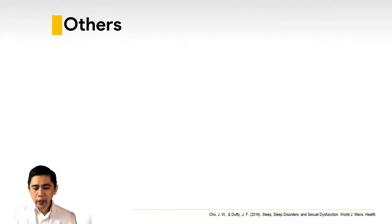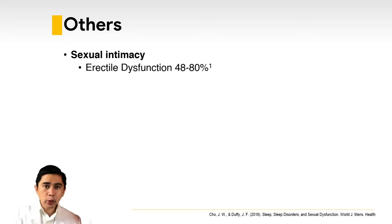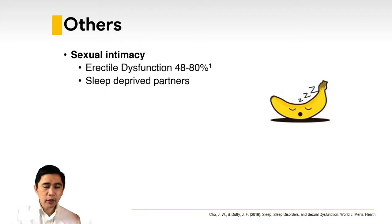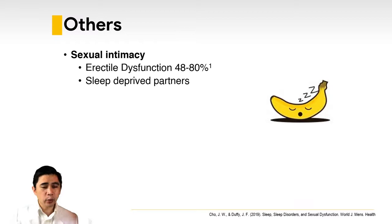OSA also affects sexual intimacy. Intermittent hypoxia during sleep from OSA carries a 48 to 80 percent risk of erectile dysfunction, and correcting OSA has been shown to improve ED as well. Sexual intimacy is also partly affected because of sleep-deprived partners — if your partner is snoring, you will also suffer sleep deprivation and it will affect your relationship.